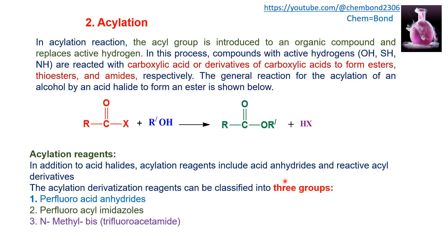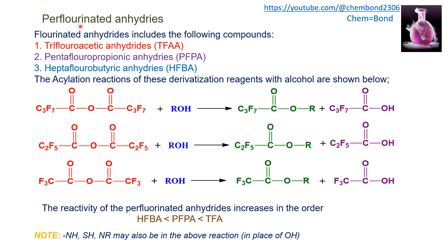In addition to acid halides, acylation reagents include acid anhydrides and active acyl derivatives, divided into three groups: perfluoroacid anhydrides, perfluoroacyl imidazoles, and methylbisfluoroacetamide. The most commonly used are perfluorinated anhydrides, which include trifluoroacetic anhydride, pentafluoropropanoic anhydride, and heptafluorobutyric anhydride. The reactions of these reagents with alcohol are shown.